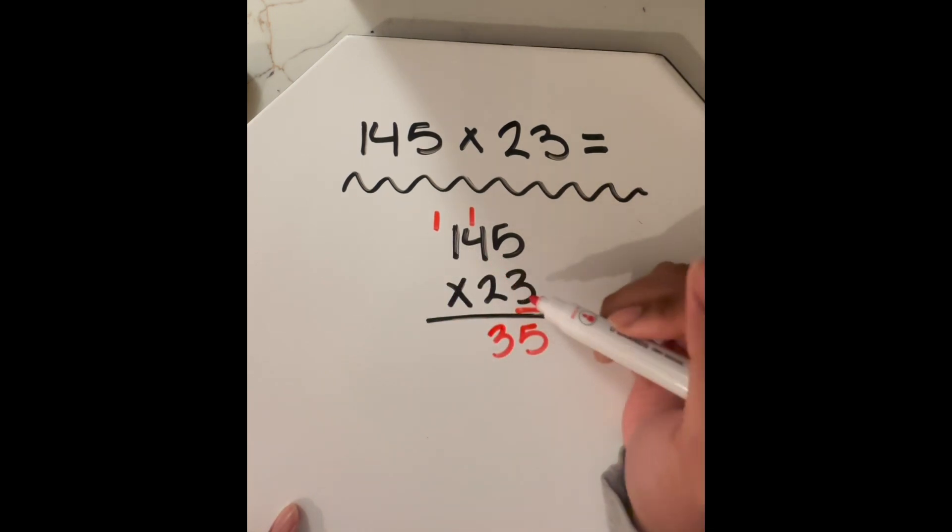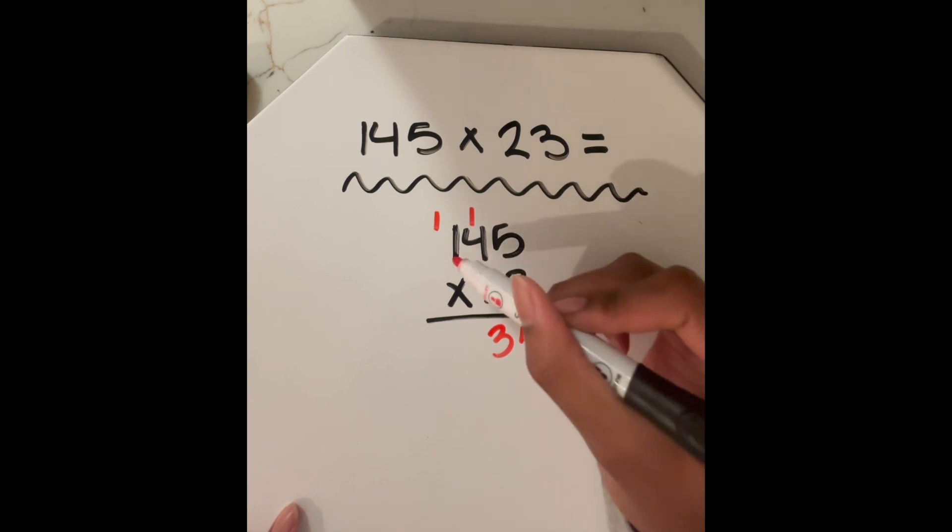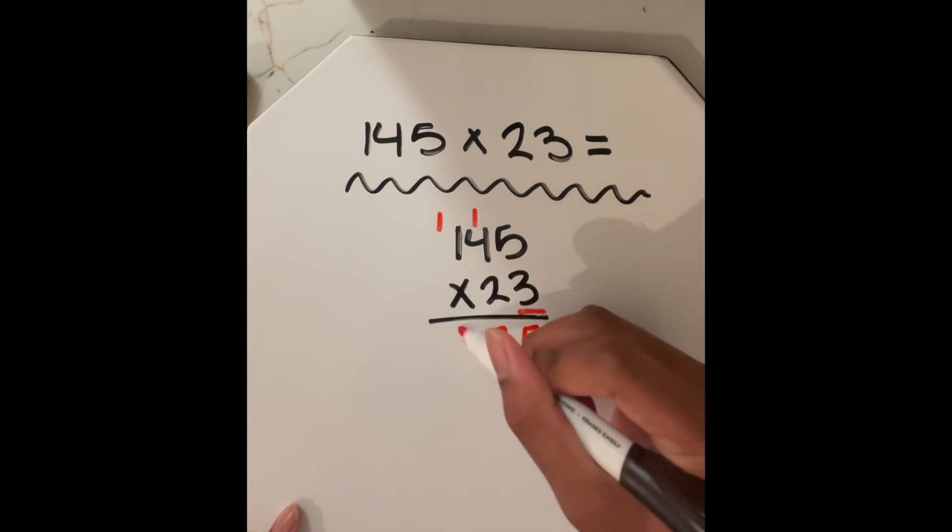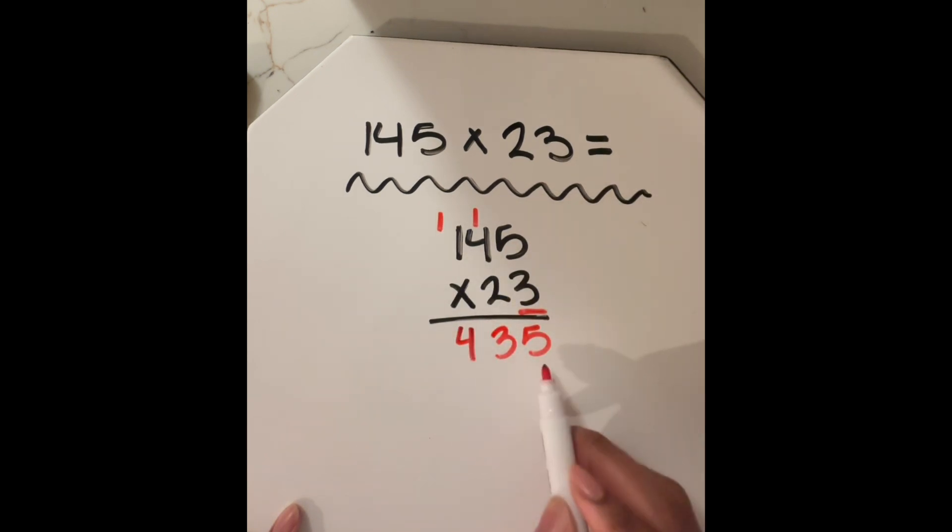And then we're going to move on. So we already dealt with this five and this four. Lastly, we have to deal with this one. So three times one, and then three plus one is four. So this gives us 435. That's what we have so far, but we are not done yet.